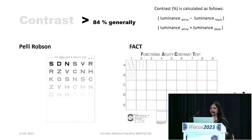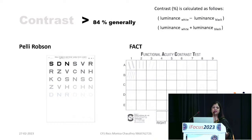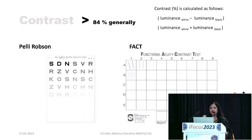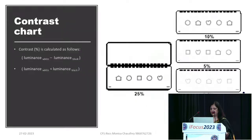A drop in contrast sensitivity can indicate refractive error, uncorrected optical issues, or early disease. Even early glaucoma can be picked up by a drop in contrast sensitivity before other signs emerge. Why would a normal, healthy eye have reduced contrast? It shouldn't — so contrast acuity alone gives important clinical clues.